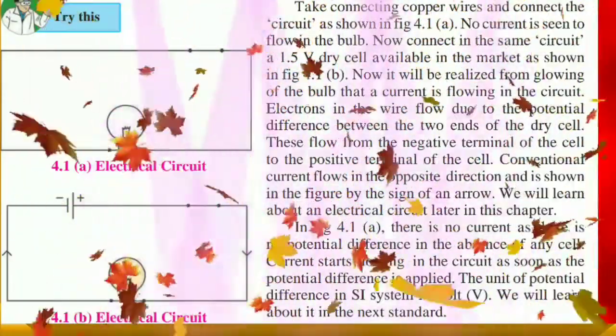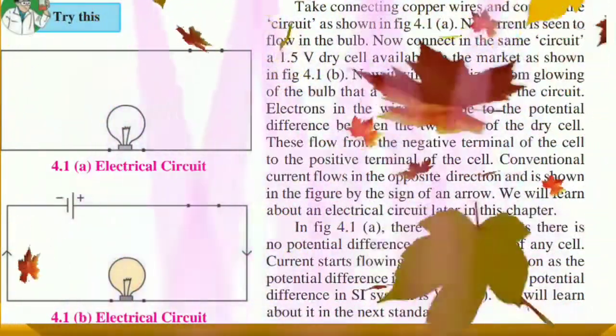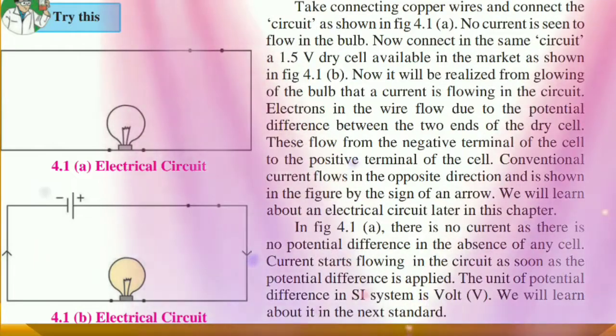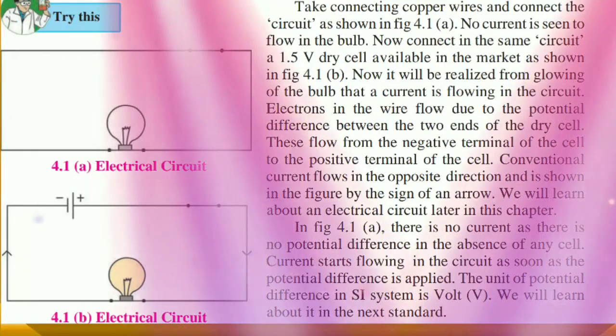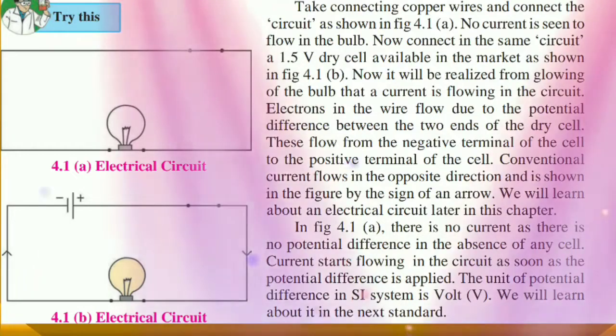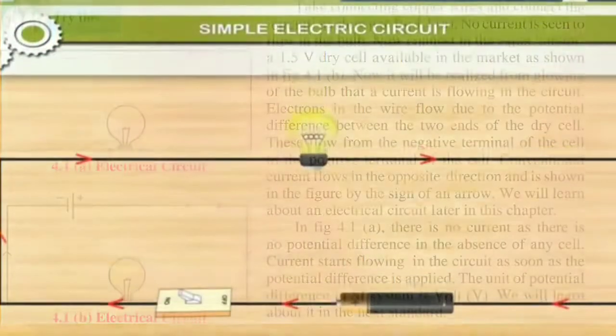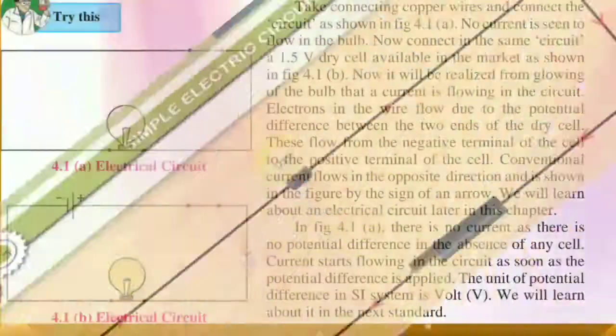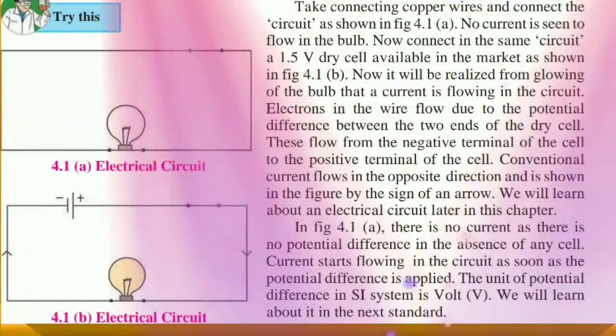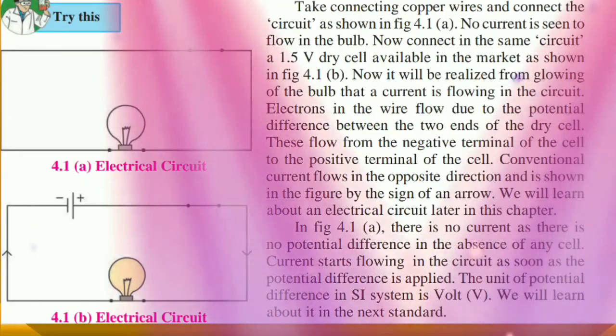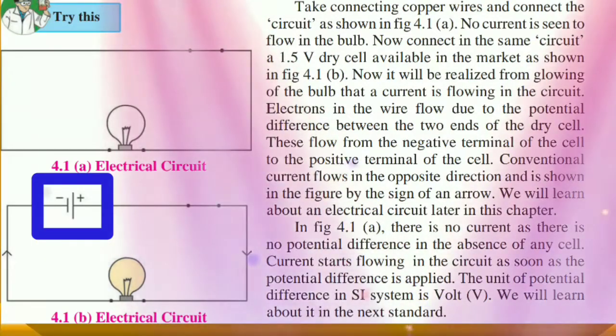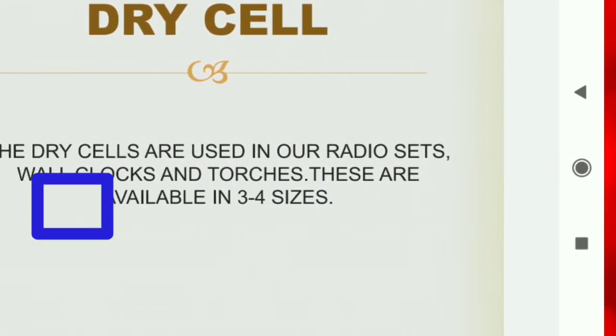Now let us see what is electric circuit. Observe the diagram students. In 4.1a, there is no current as there is no potential difference in the absence of any cell. But for point 1b, you will realize from glowing of the bulb that a current is flowing in the circuit. Electrons in the wire flow due to the potential difference between the two ends of the dry cell. These flow from the negative terminals of the cell to the positive terminals of the cell.